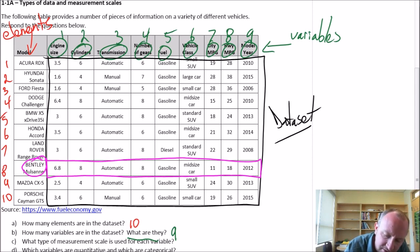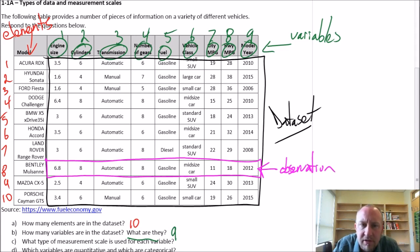So this here, let me just erase this circle to avoid any confusion. This, what's in the pink rectangle, represents the observation that corresponds with the Bentley car.